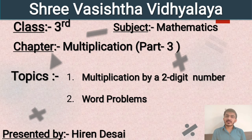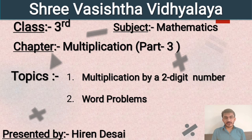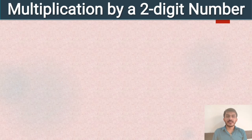Today we are going to discuss two more topics: how to multiply any number with a two digit number, and how to solve word problems of multiplication. Let us start today's first topic — multiplication by two digit number. We will understand this with some examples.